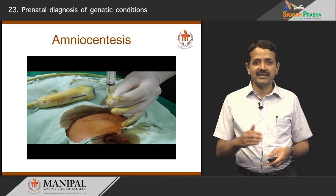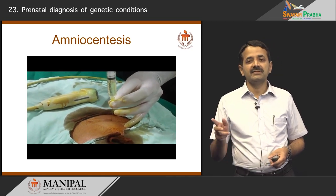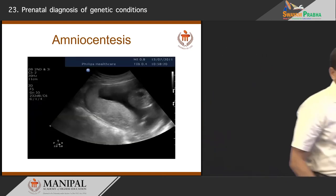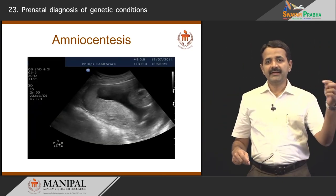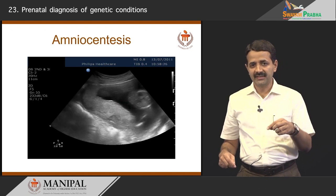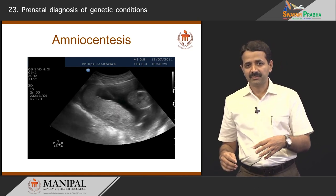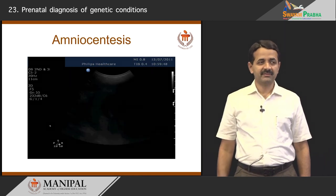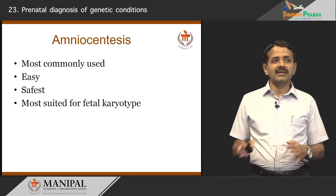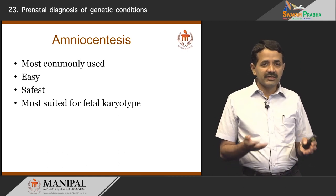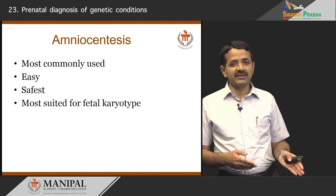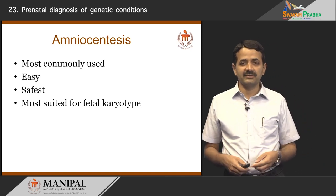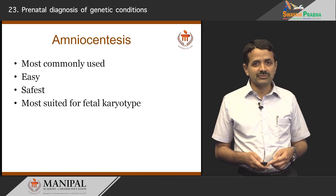This is amniocentesis. You can see clear amniotic fluid coming into the syringe, which is then sealed, labeled, and sent to the laboratory. On the ultrasound monitor, you can see the needle entering through the abdominal wall of the lady into the uterine cavity. The black space is amniotic fluid, and you can see the needle entering and the fluid being withdrawn. Amniocentesis is the most commonly used prenatal test because it is easy, done between 15 to 20 or 22 weeks, and is the safest and most suited for fetal karyotyping.